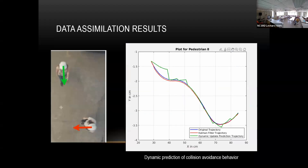Right now, we have done the data assimilation part. The blue is the original trajectory, and we have a couple of different ways of doing data assimilation that give the green and the red — the red is the traditional Kalman filter.